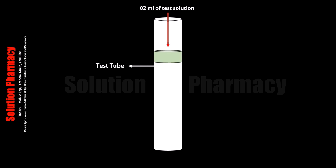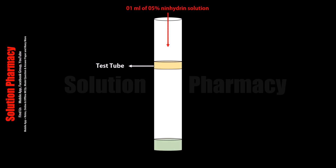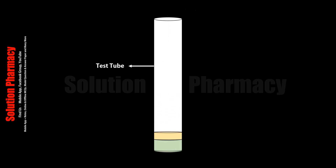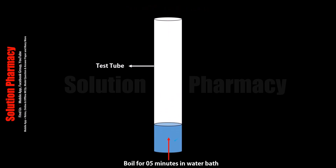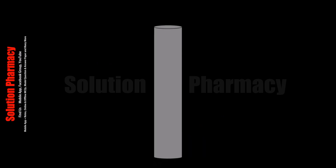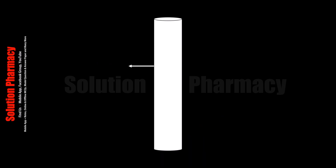This ninhydrin test is characteristic for the free amino group. That is why this ninhydrin test is used for the identification of ammonia, primary or secondary amine, and alpha amino acids.